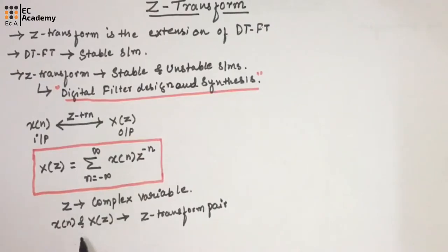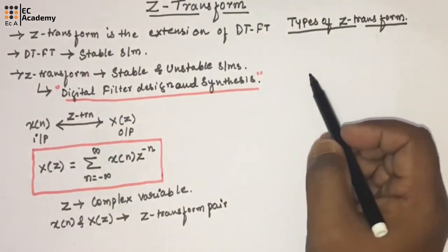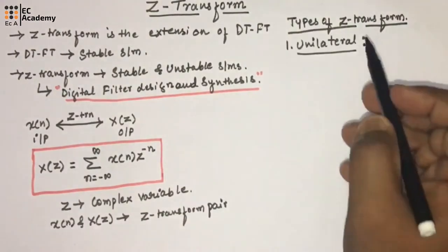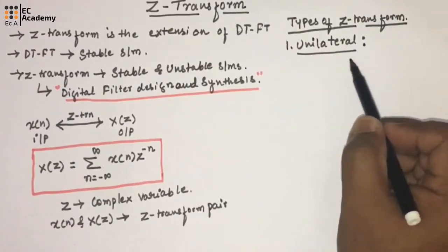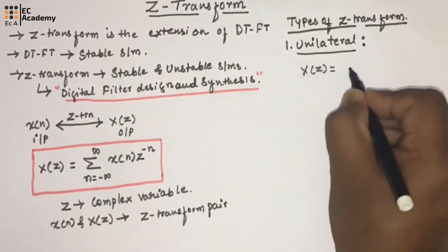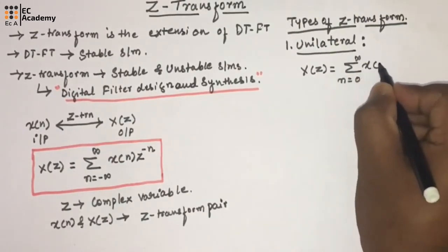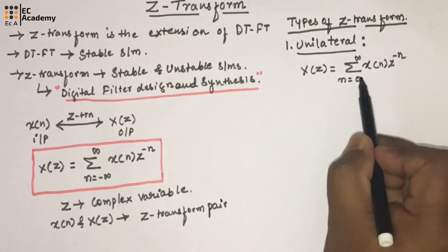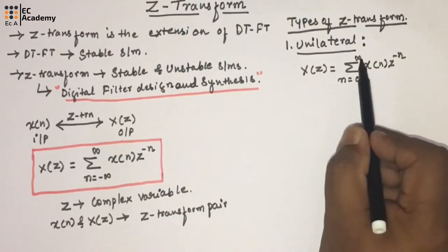Now we will see the types of Z-transform. There are two types of Z-transform: unilateral and bilateral Z-transform. We call a Z-transform unilateral when it has a single-sided summation. For example, X of Z equals summation from N equals 0 to infinity of X of N times Z to the power of minus N. This is unilateral Z-transform because the summation has only a single side, which is from 0 to infinity.